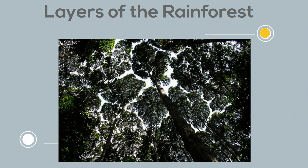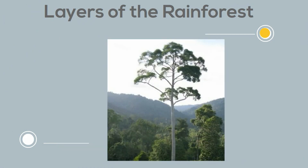And finally the emergent layer. The emergent layer consists of very large trees that poke out of the canopy and actually grow above it. They need to be able to withstand very hot temperatures and strong winds.